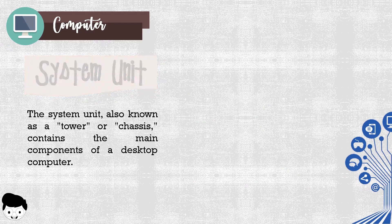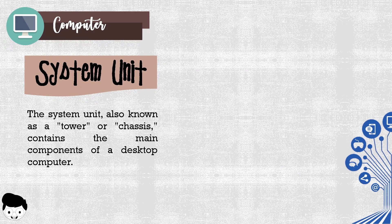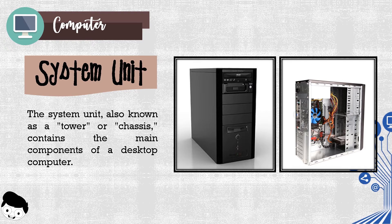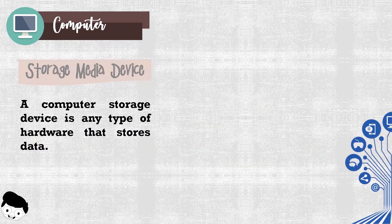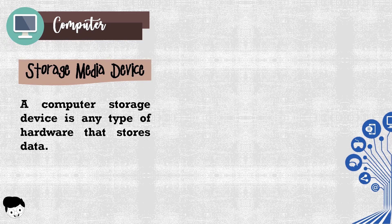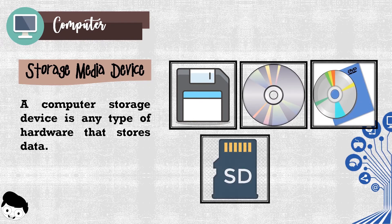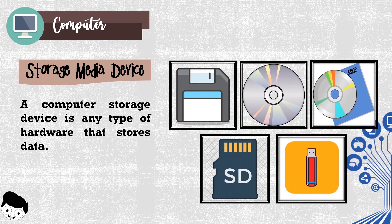System unit. The system unit, also known as a tower or chassis, contains the main components of a desktop computer. It includes the motherboard, CPU, ROM, and other components. The case that houses these components is also part of the system unit. Storage media devices: a computer storage device is any type of hardware that stores data. For example, floppy disks, CD, DVD, memory card, and USB flash drive.